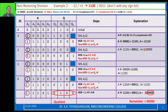Now let us see the second example. In the second example, I am dividing minus 12 by 3. In this case, if there is a negative number in the dividend or divisor, you just omit that negative value. Just assume that both are positive values, you proceed, then finally you decide the sign. Based on the table, you have to decide the sign.